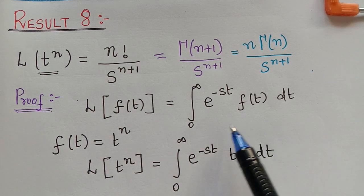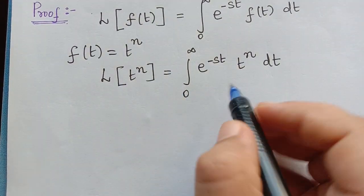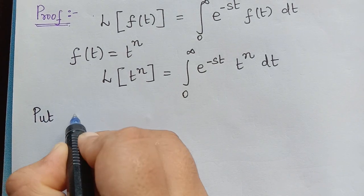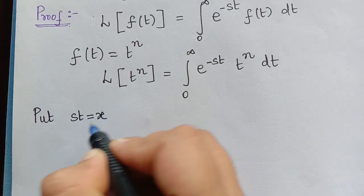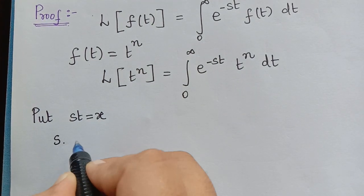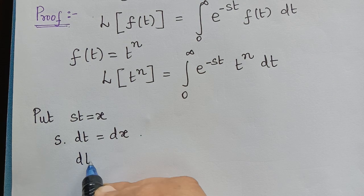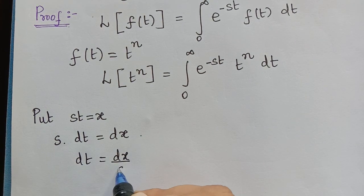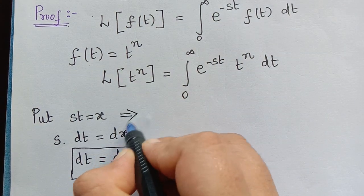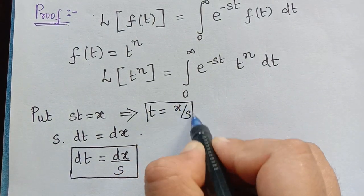Therefore we obtain the Laplace transform of t to the power n equal to the integral from 0 to infinity of e to the power negative st times t to the power n dt. To solve this integration we adopt the method of substitution, putting st equal to x. Differentiating gives s dt equal to dx, so dt equals dx divided by s, and t equals x divided by s.